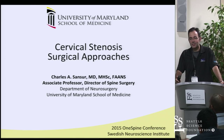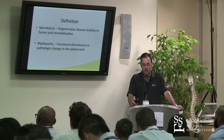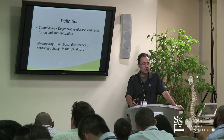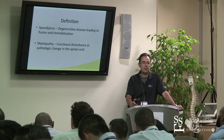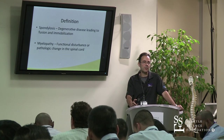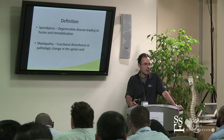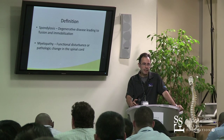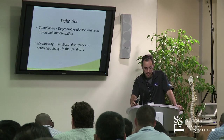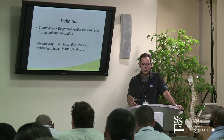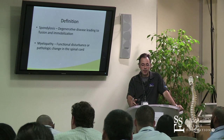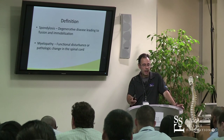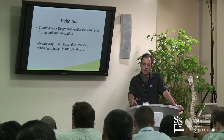These are my disclosures. We're going to start out with a couple of definitions. Cervical spondylosis is degenerative disease that leads to spontaneous fusion and immobilization. It's the body's natural mechanism to compensate for pathology in the spine, naturally stabilizing itself to accommodate instability, disc-based collapse, and the general process of degenerative disc disease.